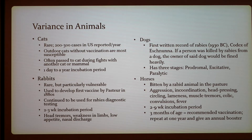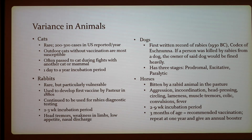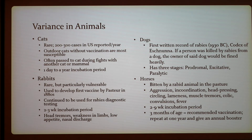For dogs, the first written record of rabies dates to 1930 BC in the Codex of Eshnunna, which indicated that if a person was killed by a rabid dog, the owner would be heavily fined. Rabies in dogs has three stages: prodromal, excitative, and paralytic.